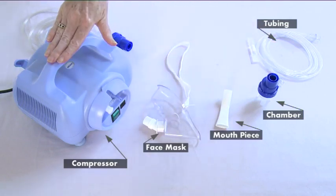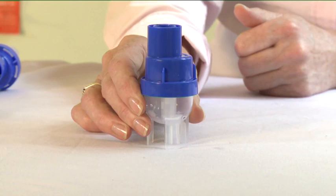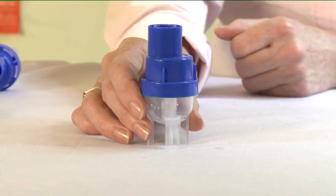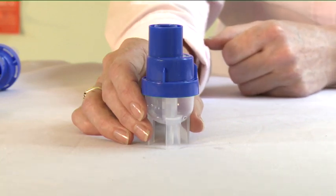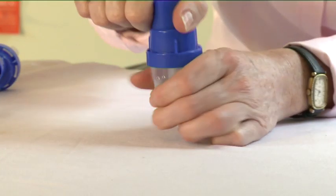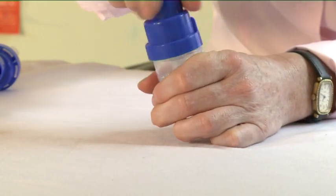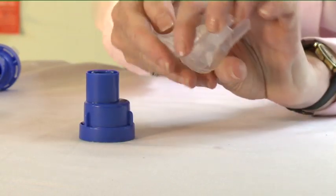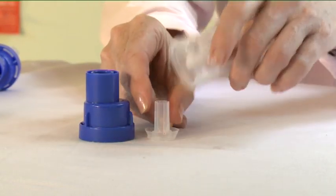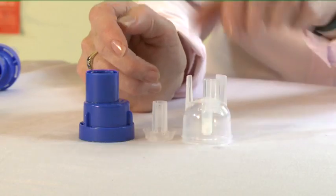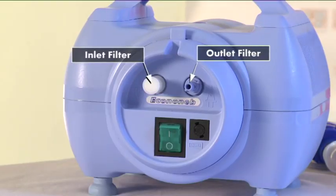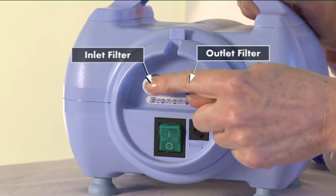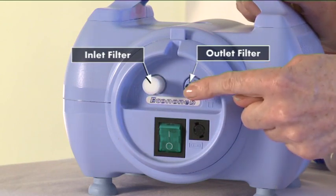The nebulising chamber is a small chamber in which a liquid drug is turned into a fine mist or aerosol which you can inhale into your lungs. It is made up of three parts and will not function correctly unless all three parts are in place. The compressor is the power source responsible for pressurising the air to produce the aerosol or mist.